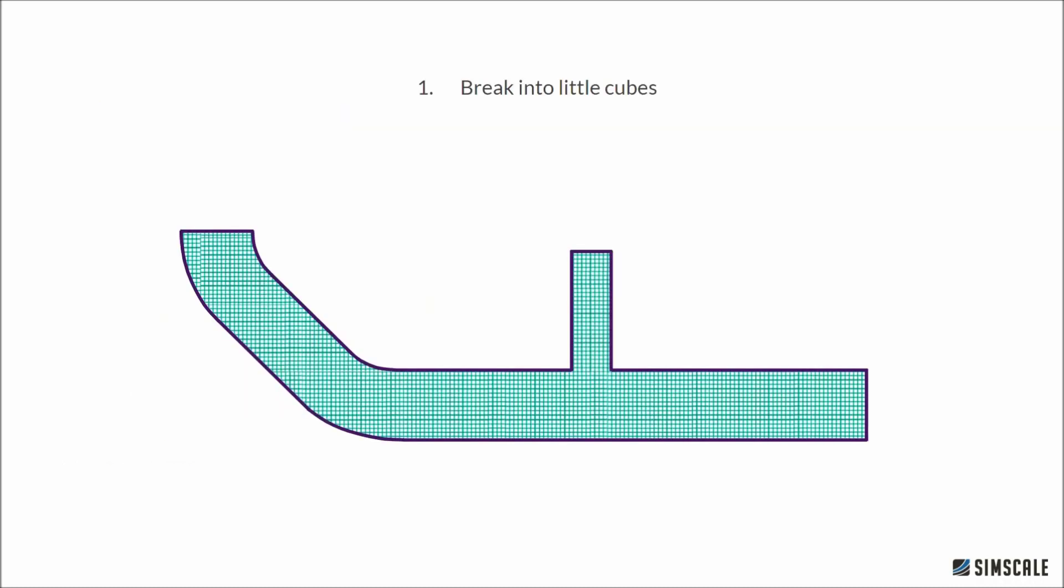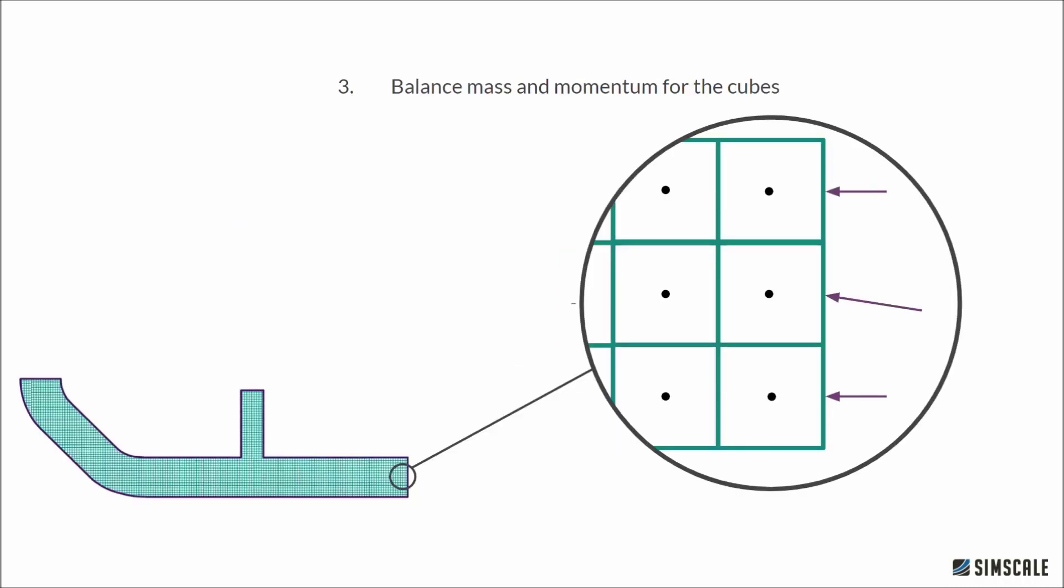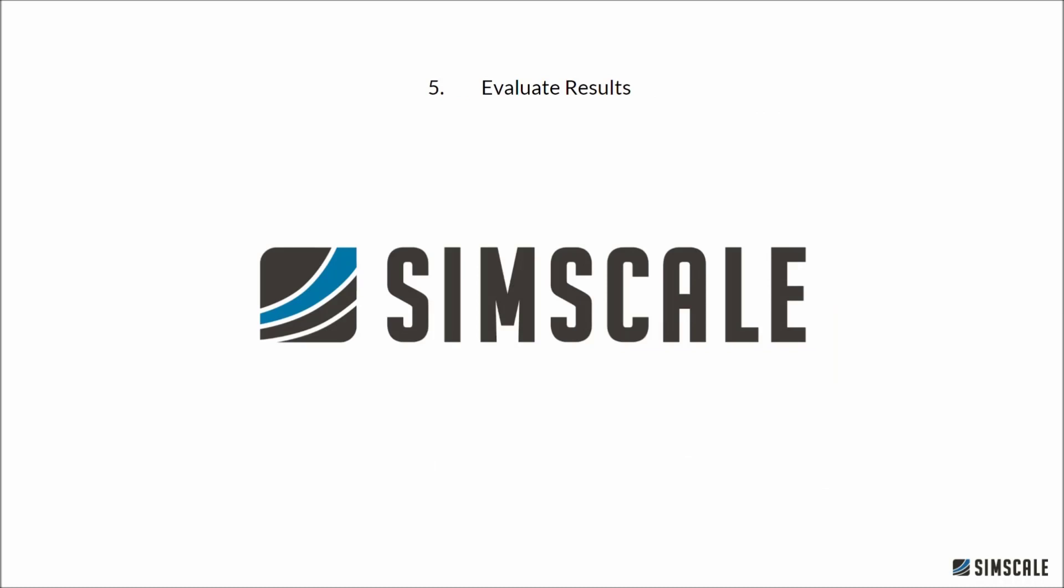Okay, so first, looking down the centre of the pipe, we break it into a bunch of little cubes. Then, we tell the computer where water is entering or leaving. These areas, called boundaries, are the only place where creation or destruction is happening, if you remember from the ink example. Then, we balance our mass and momentum for each cube. This could take forever to do for all cubes by hand, so we'll let the computer handle this step. Then we can take a look at our results.